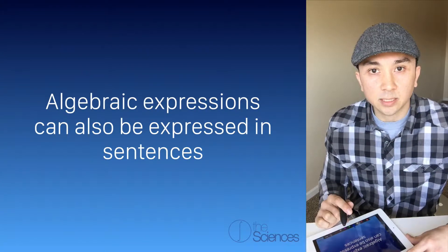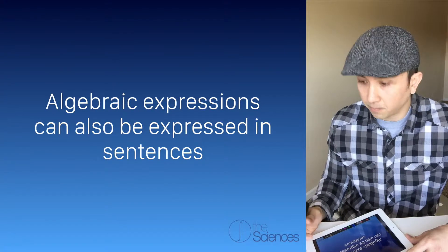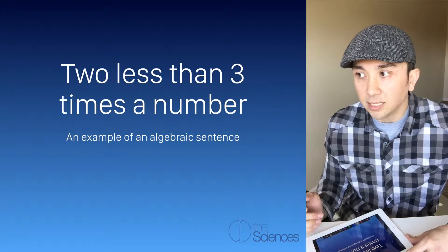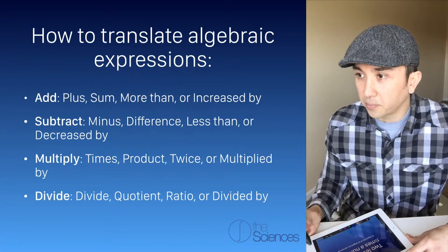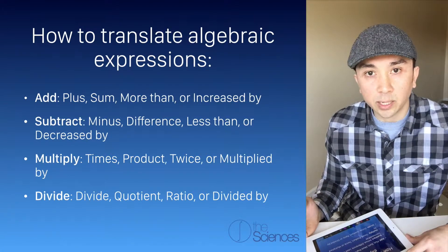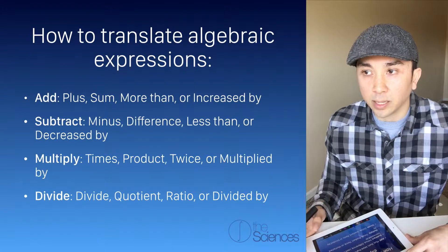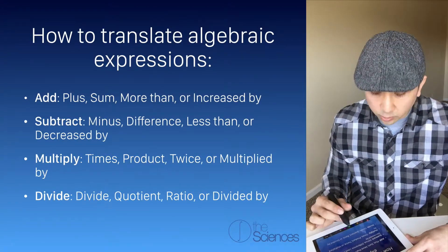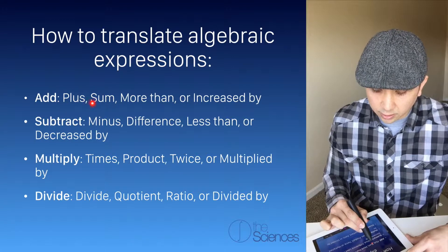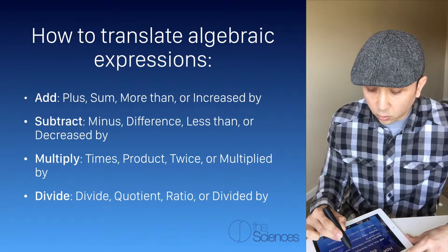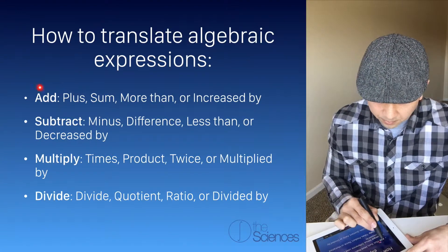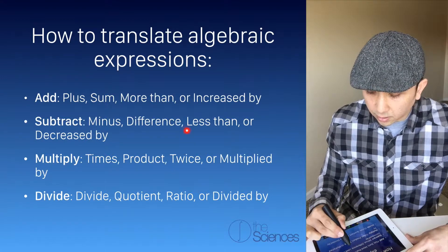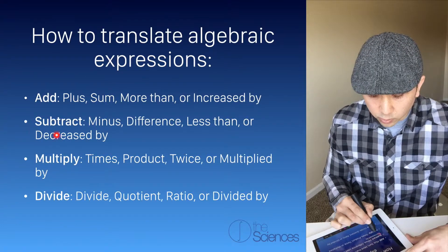Algebraic expressions can also be written in sentences. Here's an example: '2 less than 3 times a number.' We can translate algebraic sentences into algebraic expressions to solve problems. Anywhere we see the words plus, sum, more than, or increased by, we know we're going to add. And anywhere we see the words minus, difference, less than, or decreased by, we know we're going to subtract.